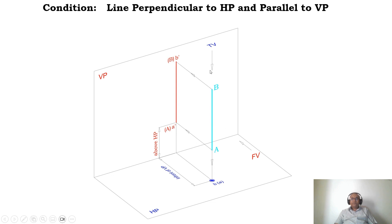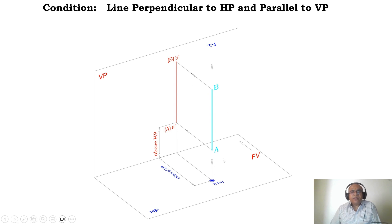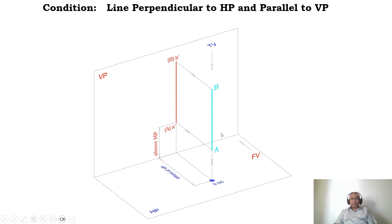When you look from the top view, both B and A coincide with each other, so you get a point. The distance from the vertical plane is seen in the horizontal plane, and the distance above HP is seen in the vertical plane. Since both endpoints are equidistant from the vertical plane, the line is parallel to VP, so I see the true length in VP — that is capital A and capital B. When looking from the top view, B is near to the observer so B is visible, and A is away from the observer, so A is in brackets.